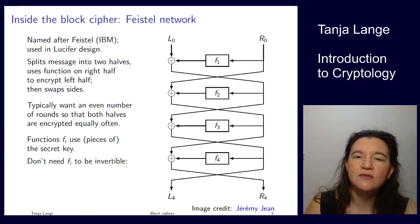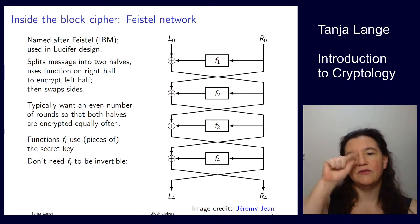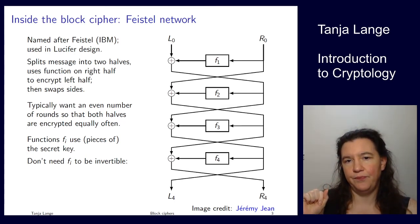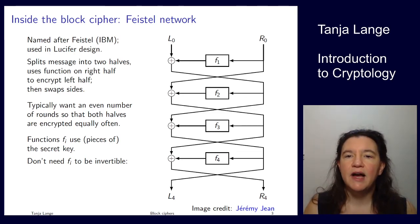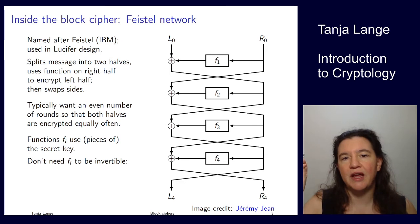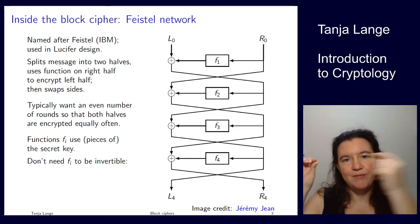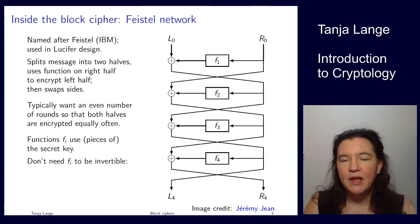There's a nice feature of this design: the function F in the middle doesn't need to be invertible. The whole Feistel network is invertible, but these F functions can be one-way functions. They don't even have to take the same number of bits — for the XOR you need matching length — but you could arrange the bits on either side accordingly.